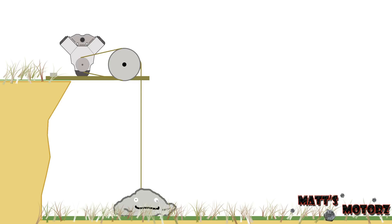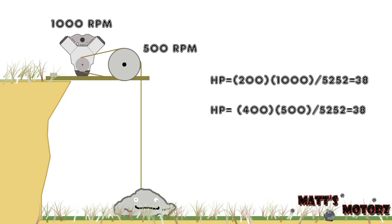If we put a 2-to-1 gear ratio between the engine and the pulley pulling up the rock, that will effectively double our torque at the cost of RPM — it will cut our RPMs in half and double the torque. The engine will still be running at 1,000 RPM; however, the pulley attached to it through the 2-to-1 gear ratio will now be rotating at 500 RPM. So now we're producing 400 foot-pounds of torque and we can lift the rock. Notice that 200 foot-pounds at 1,000 RPM is the same exact horsepower as 400 foot-pounds at 500 RPM. This means any gearing through any transmission does not affect the horsepower.